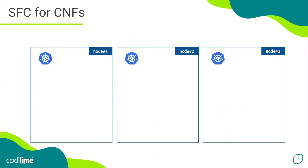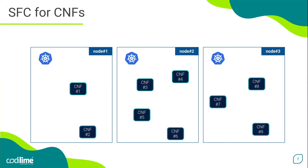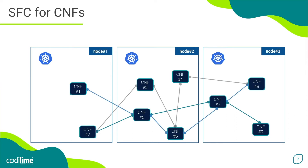Now let's look at an example deployment composed only of CNFs in the Kubernetes environment. Since we are working entirely in the software domain, in this case service function chaining can be implemented based on dedicated direct links between selected CNFs. It is worth noting that quite a few such links may be needed for CNFs that belong to more than one chain at the same time.